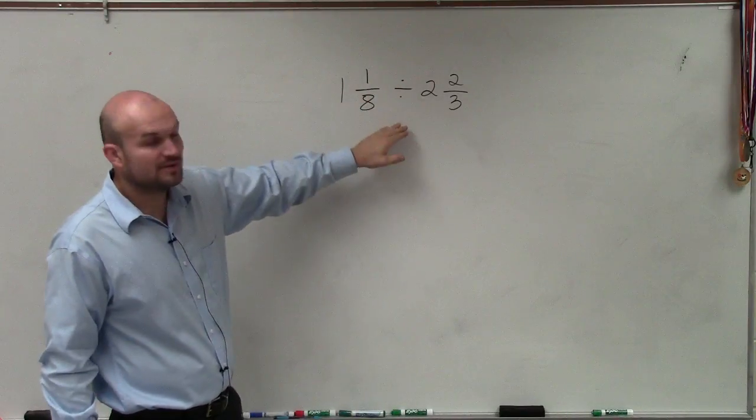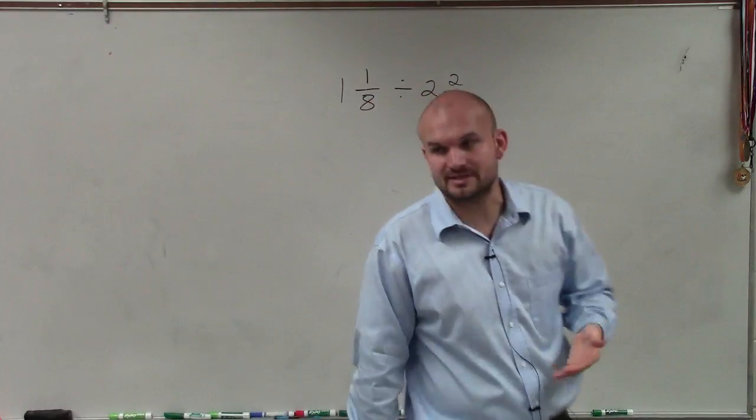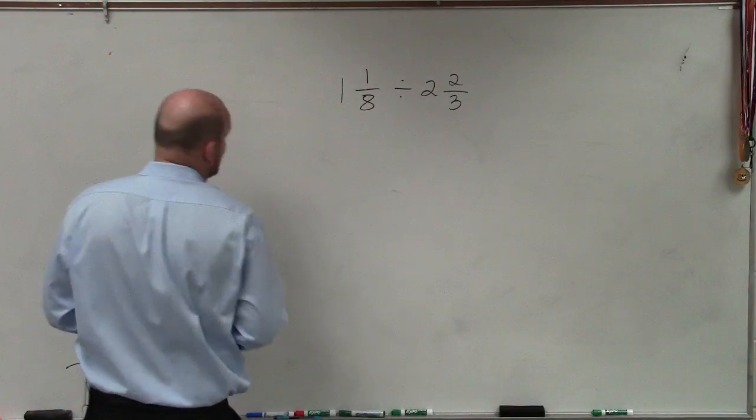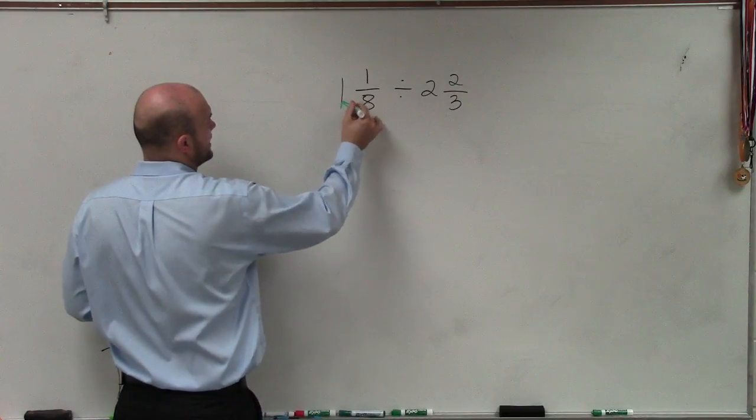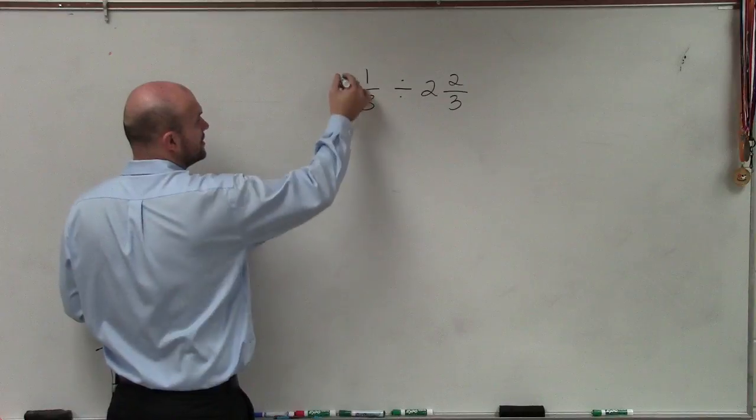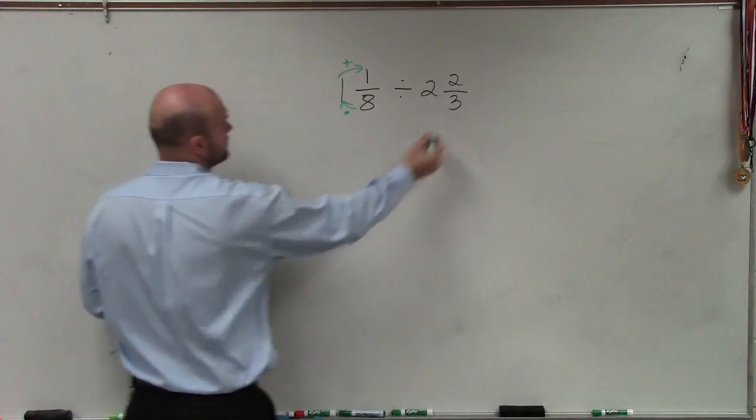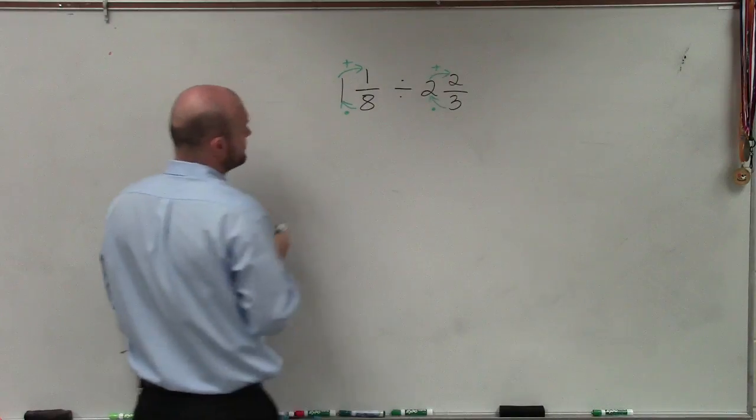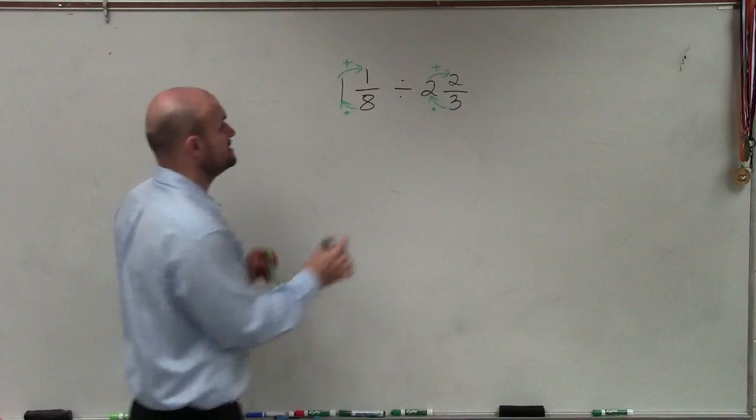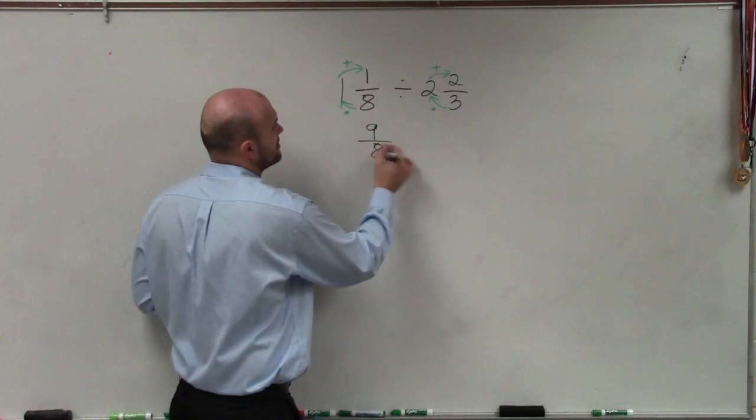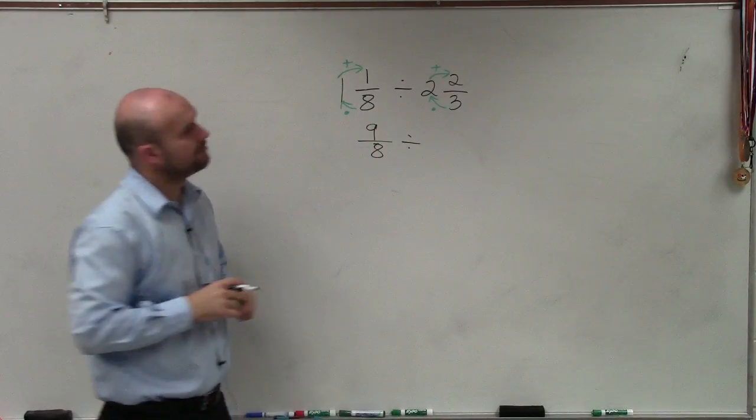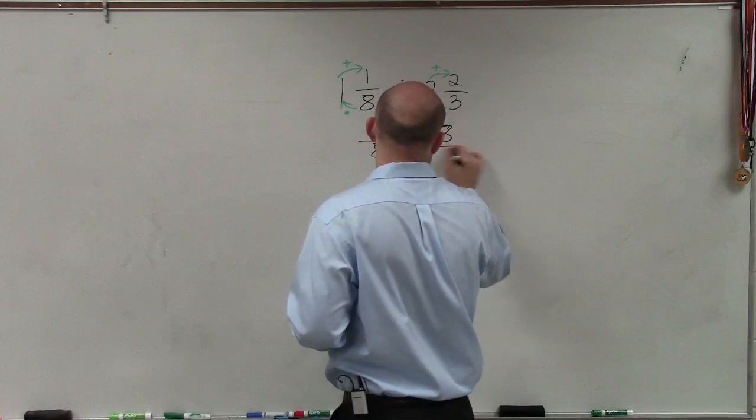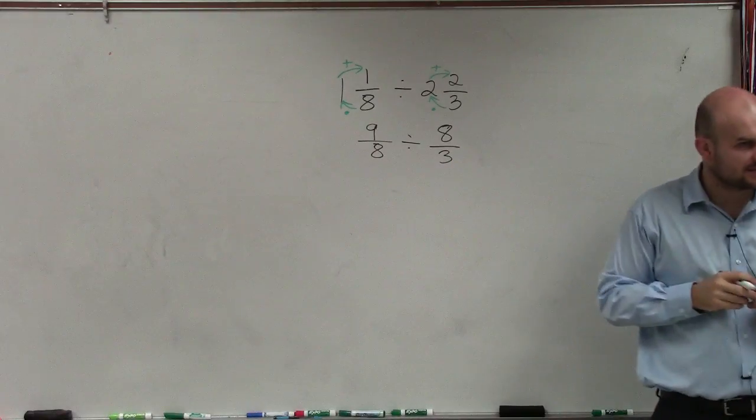But when multiplying and dividing, it doesn't matter if they have the same denominators or unlike denominators. What we're going to want to do is convert these to mixed numbers. So to do that, you take your denominator and you multiply it by your whole number, and then add it to your numerator. Multiply, add. So I do 8 times 1, which is 8, plus 1 is 9. So you have 9/8 divided by 3 times 2, which is 6, plus 2 is going to be 8/3. Notice how I keep the denominators the same.